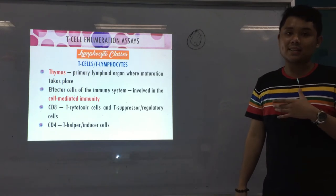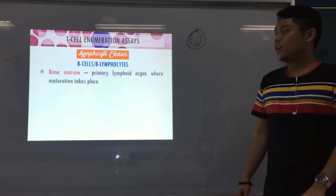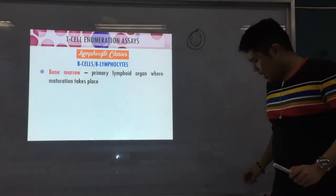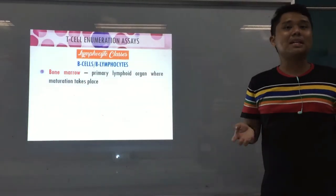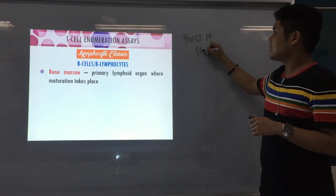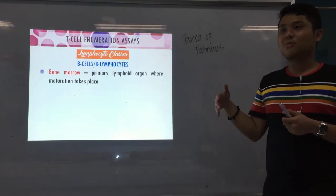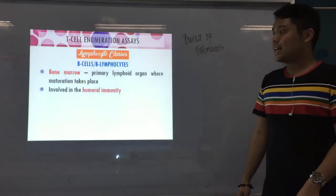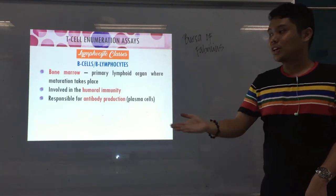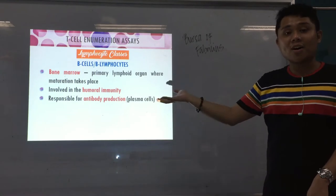The two very important types of T-cells are CD4 and CD8. The next class is B-cells or B-lymphocytes. Your B-cells mature in the bone marrow. They are also named 'B' because they were discovered in the Bursa of Fabricius in birds. B-cells are involved in humoral immunity and are responsible for antibody production. B-cells may differentiate further into plasma cells, which are the sources of antibodies.